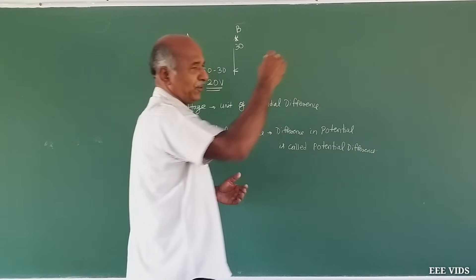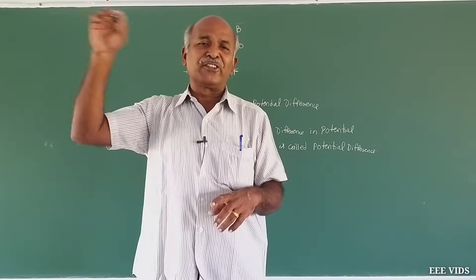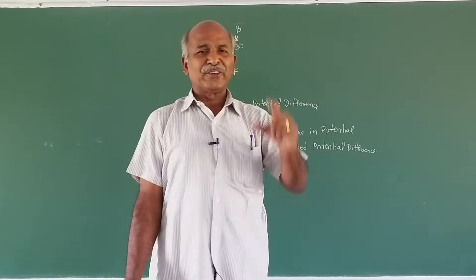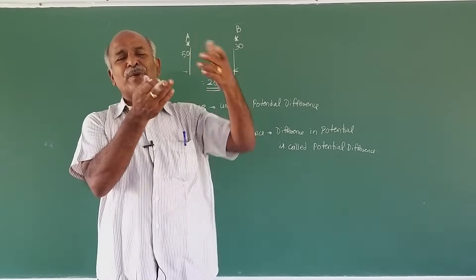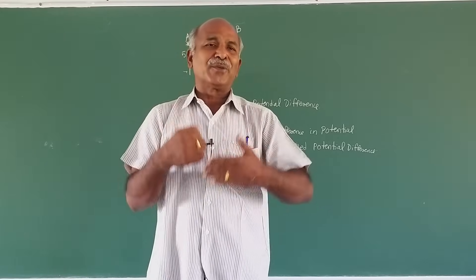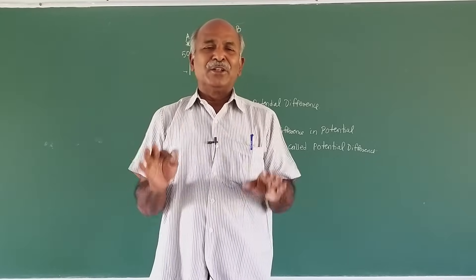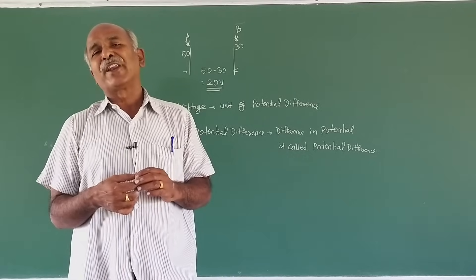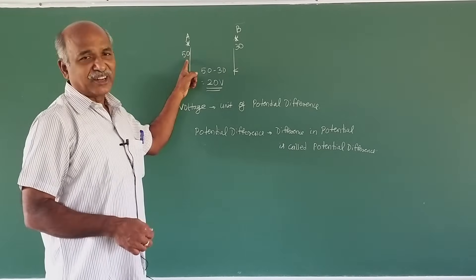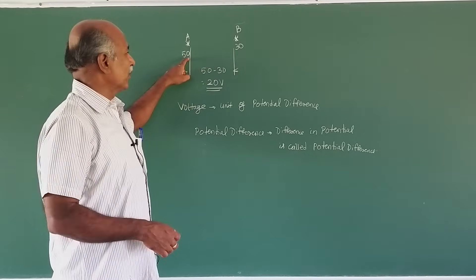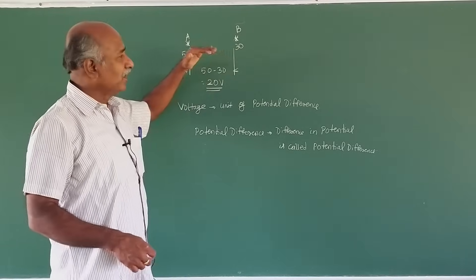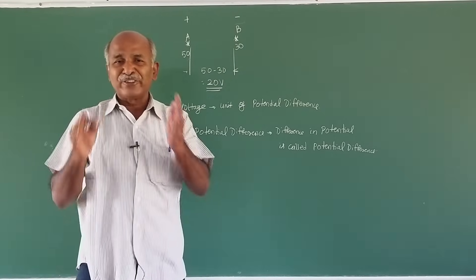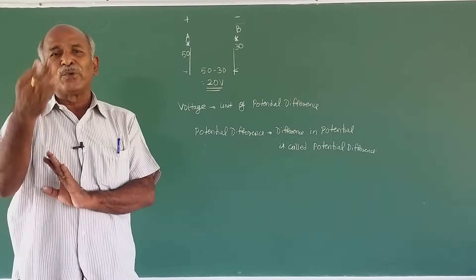In a phase-neutral system, there are charges in the phase and zero charge at the neutral, which is the ground point. If you measure one point to ground, you get 230 volts. That voltage is measured. If you go to a battery, there will be a plus and minus terminal. When you measure, it means 1.5 volts between plus and minus. Plus and minus represent the potential difference.